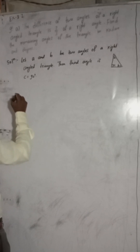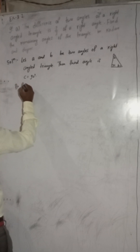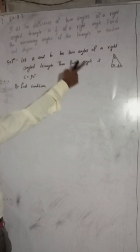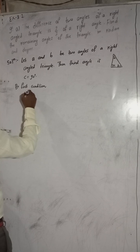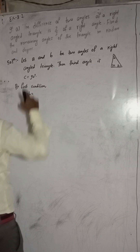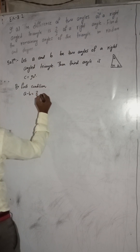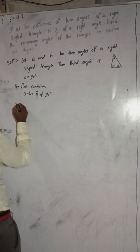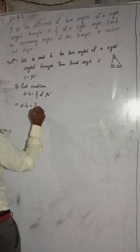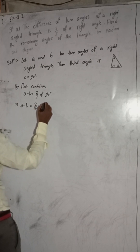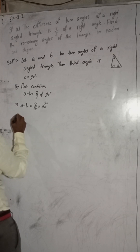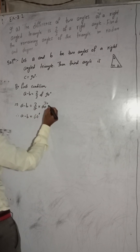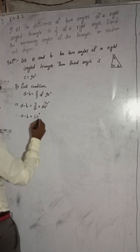By the first condition, the difference of two angles: A minus B is equal to 2/3 of a right angle. Two-thirds of a right angle means 2/3 of 90 degrees. So A minus B is equal to 2/3 into 90, which gives us A minus B is equal to 60 degrees. This is our equation one.